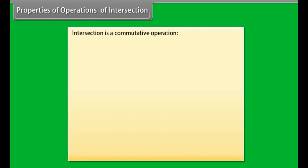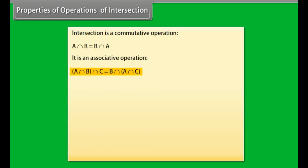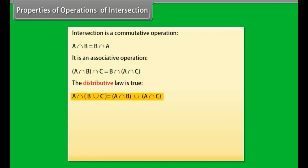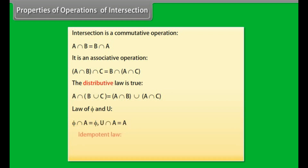Properties of operations of intersection: Intersection is a commutative operation — A intersection B is equal to B intersection A. It is also an associative operation — A intersection (B intersection C) is equal to B intersection (A intersection C). The distributive law is true: A intersection (B union C) equals (A intersection B) union (A intersection C). Law of Phi and U: Phi intersection A equals Phi; U intersection A equals A. Idempotent law: A intersection A equals A.